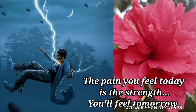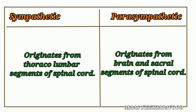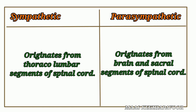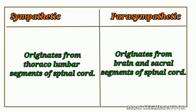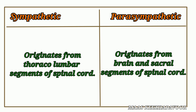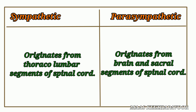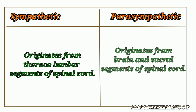First of all, let me explain some anatomical differences between sympathetic and parasympathetic fibers. The sympathetic fibers originate from thoracolumbar segments of the spinal cord, whereas the parasympathetic fibers arise from the brain and sacral segments of the spinal cord.